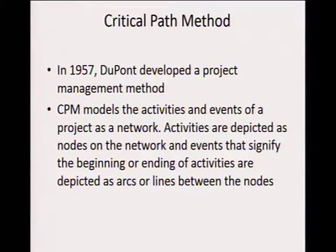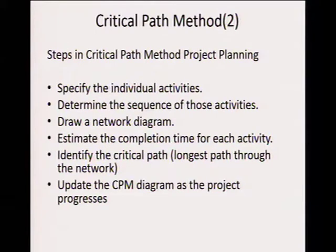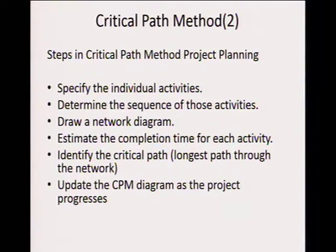Critical path methods: in 1957, a project management method called CPM was developed. It models the activities and events of a project as a network. Activities are depicted as nodes on the network, and events that signify the beginning or ending of activities are depicted as arcs or lines between the nodes. Steps in critical path methods include: specify the individual activities, determine the sequence of those activities, draw a network diagram, estimate the completion time for each activity, and identify the critical path — meaning the longest path through the network. The critical path is very important because should anything happen along it, the whole project is delayed. Finally, update the CPM diagrams on the project.